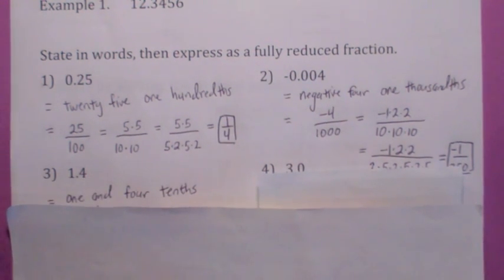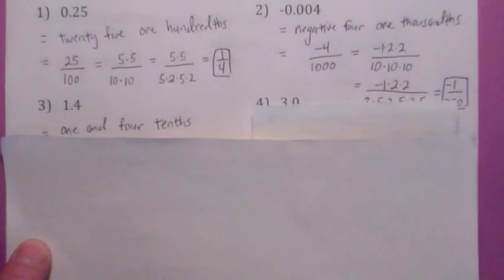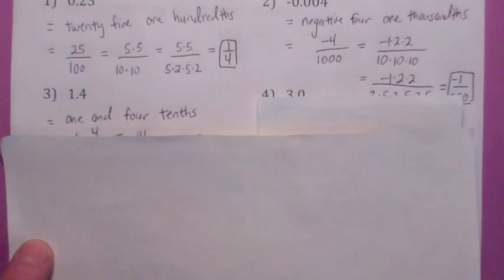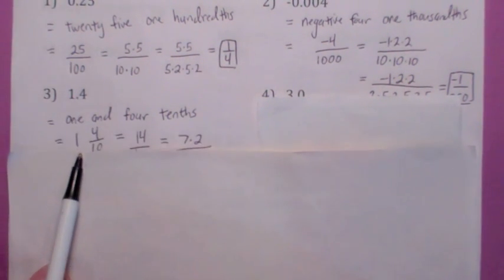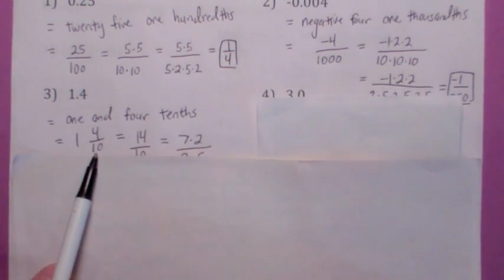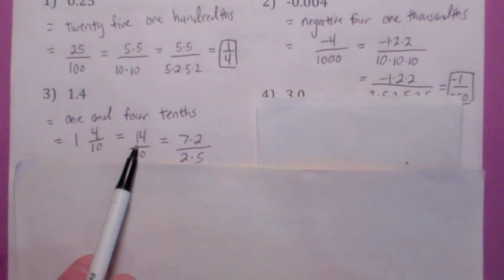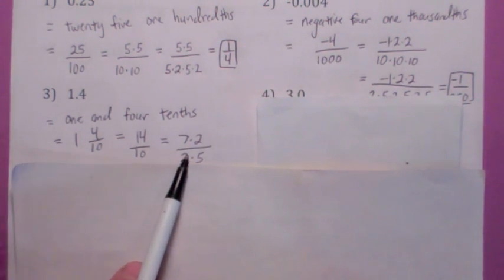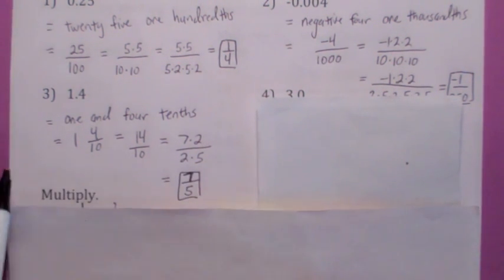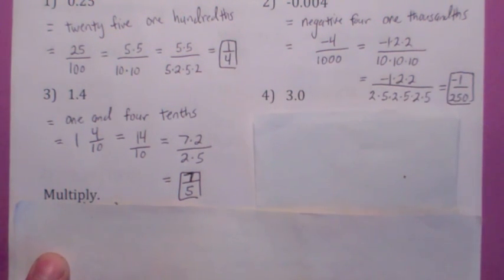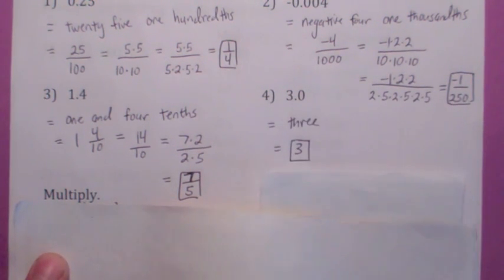This one is 1.4, which is 1 and 4 tenths, as a mixed number. You could write it as 14 over 10 as an improper fraction. When you reduce it, you cancel the twos and you get 7 fifths. And 3.0 — that's just 3.